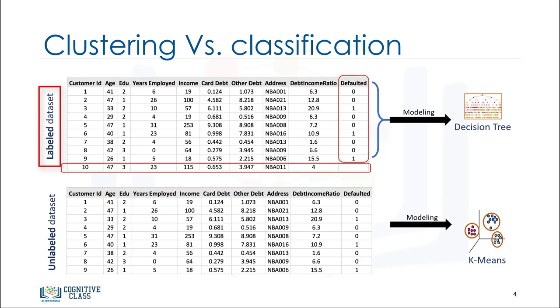Support vector machines or SVM, or logistic regression to predict the default value for a new or unknown customer. Generally speaking, classification is a supervised learning where each training data instance belongs to a particular class.